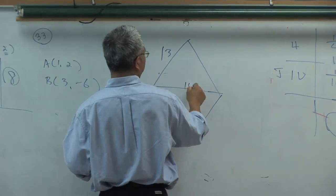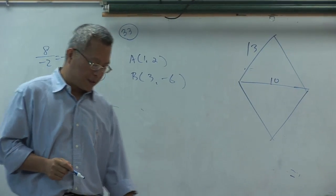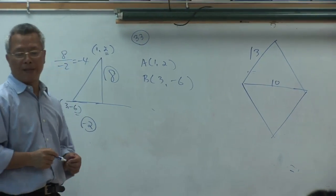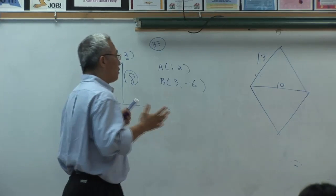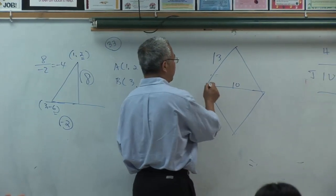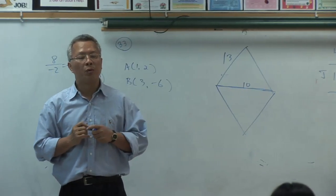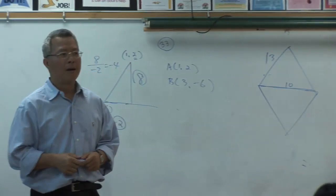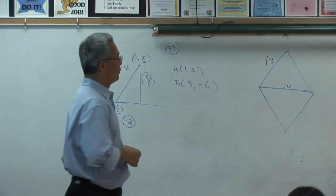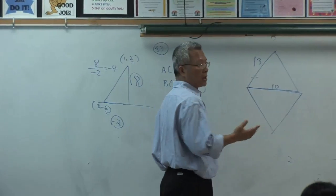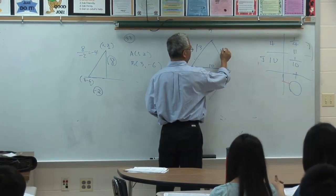This is 13. This is 10. This is a rhombus. We want to figure out the area of this rhombus. How do we do it? A rhombus is made of two triangles — specifically, isosceles triangles. That's the key. If this side is 10 and this side is 13...